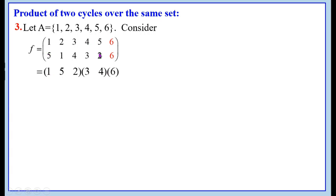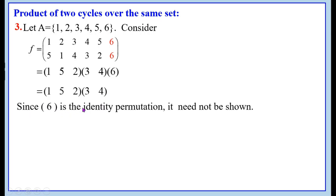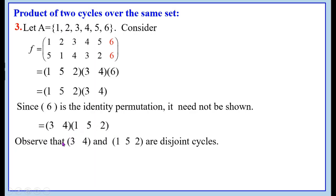These are the product of cycles. The first cycle is (1, 5, 2), the second cycle is (3, 4), and the third is 6. That is equal to the cycles (1, 5, 2) and (3, 4). Since 6 is the identity permutation, it need not be shown. This can also be written as the product of the two disjoint cycles (3, 4) and (1, 5, 2), because no element is common in these two cycles.